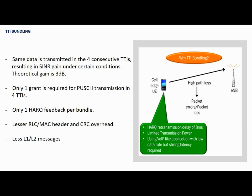Only one HARQ feedback per bundle is required. There is lesser RLC, MAC header, and CRC overhead because all the TTIs are bundled before forwarding. This reduces headers, and L1 and L2 signaling overhead is also reduced.